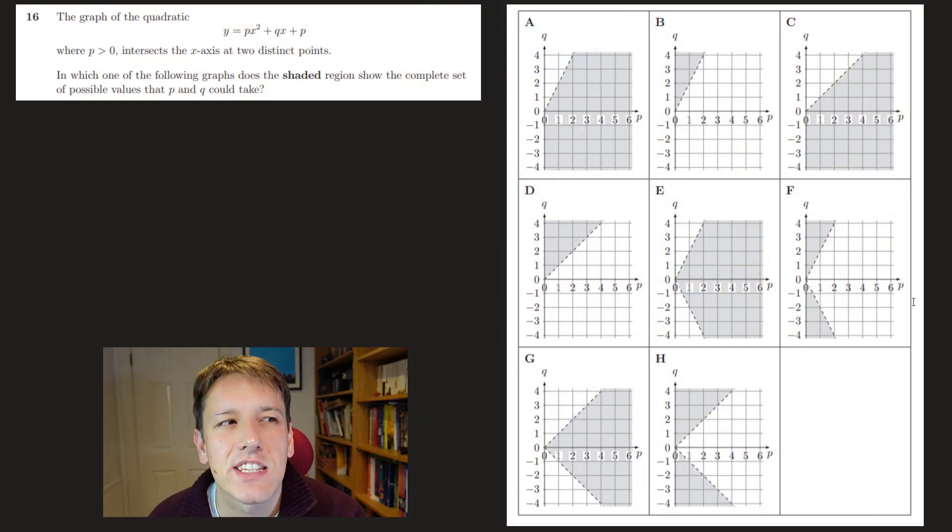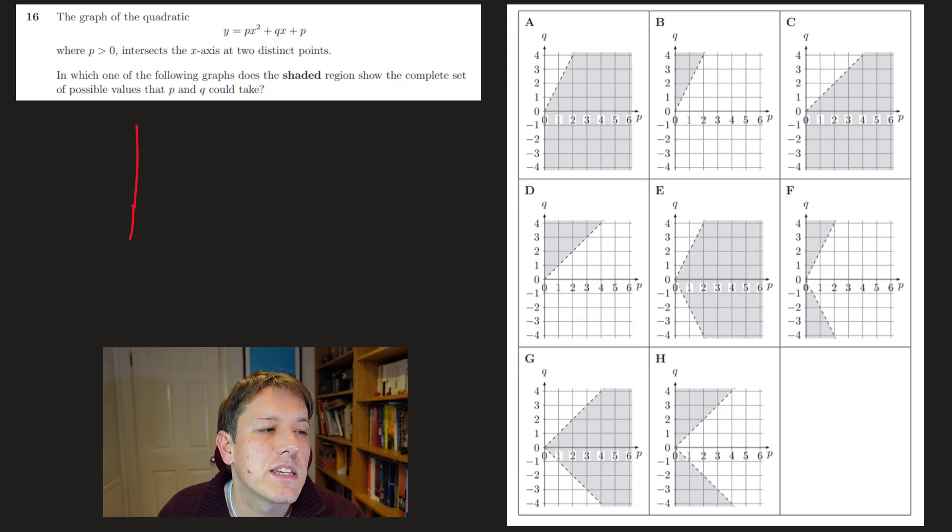So in question 16, it says we've got this graph of a quadratic y equals px squared plus qx plus p, where p greater than zero intersects the x-axis at two distinct points. So these things on the right here are not the graphs of this quadratic. It says in which one of the following shaded graphs does the region show the complete set of values if possible for p and q, so that that's the case. So remember if I've got a quadratic, p is bigger than zero, so it's a positive quadratic. If it's going to intersect the axis here at two points, you need the discriminant of the quadratic to be bigger than zero, so that I get two real roots.